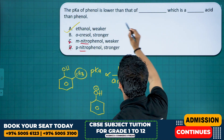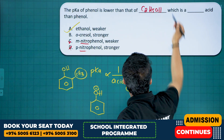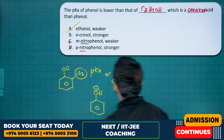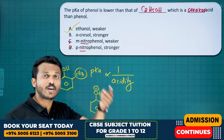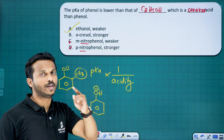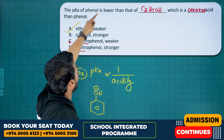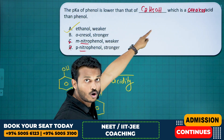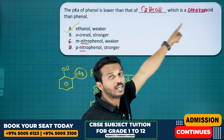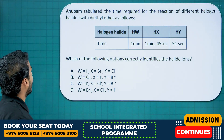Overall, pKa of phenol is lower than that of ethanol, C2H5OH, which is a weaker acid than phenol. Since ethanol is a weaker acid, its pKa is higher in value. So option A is the answer.